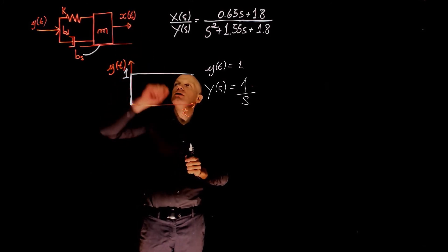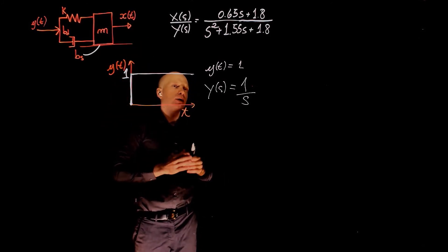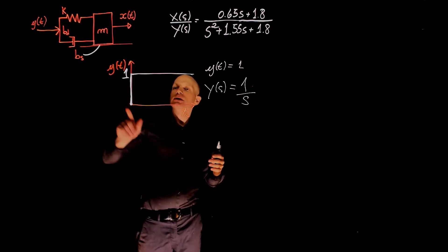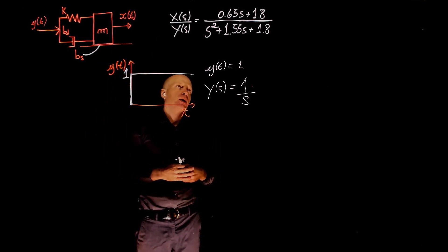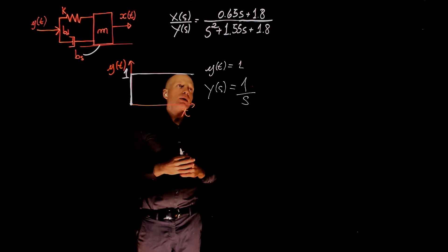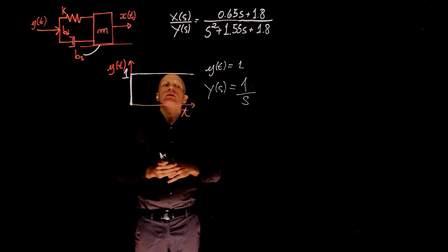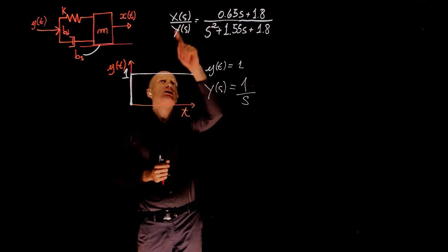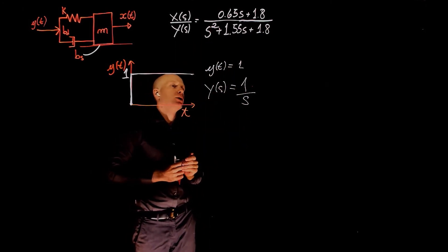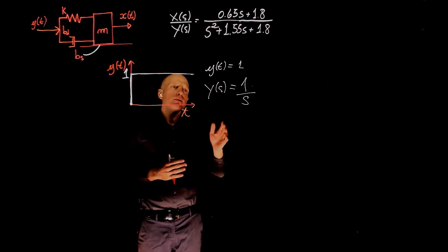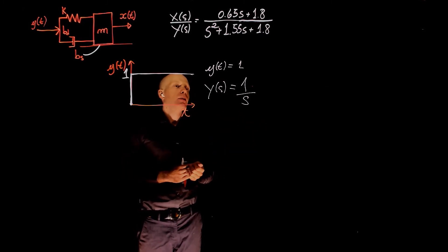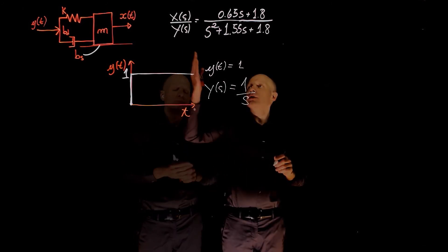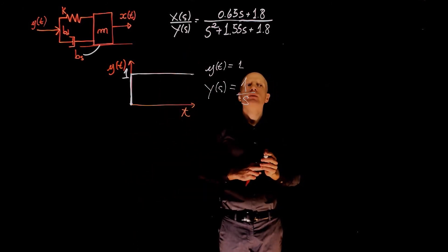And now we watch what happens to x(t). That's the response of the mass, that is the displacement that results from this input. To find now x(t), we need to replace y(s) here with the appropriate input and then solve for the inverse Laplace. We're not going to do that because it will take some time, but what we can do is to find the final value.